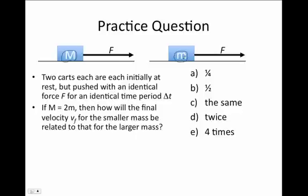If I'm doing this problem as exactly as I've read it, then how would the speed, the final speed, of the smaller mass be compared to the speed of the bigger mass? Would it be a quarter as large, a half as large, the same, twice the speed, or four times the speed of the larger mass?